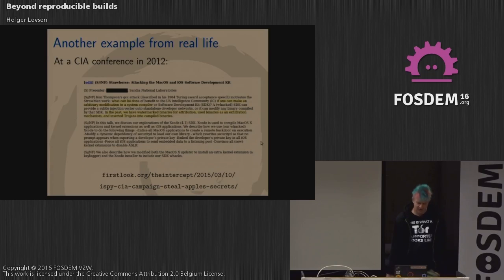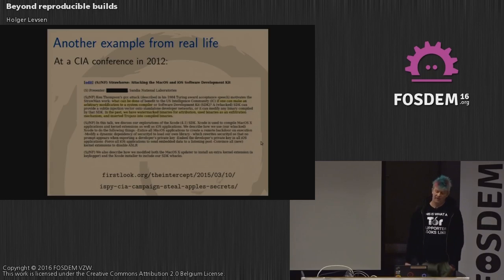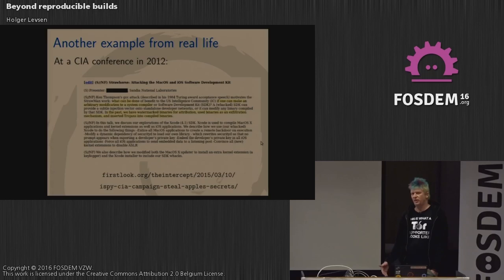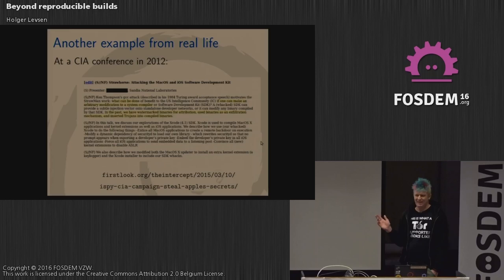From the Snowden documents, the CIA talked about modifying SDKs — in this case for iOS, but there are other things too. They discussed how they can put a backdoor into the SDK so that when developers use it to build applications, there's a backdoor in all the applications. While this was theoretical in the Snowden documents, last year there was the XcodeGhost vulnerability, an iOS backdoor found in the wild. WeChat was the most popular application affected, with tens of millions of users having this backdoor. The source code was fine — it was just the SDK which was backdoored.